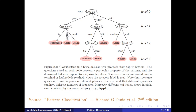This leaf corresponds to watermelon, this one to apple, this to grape, grapefruit, lemon, banana, cherry, and grape. There is no mixture of two fruits in the same leaf. Each leaf contains a pure class or pure category — a single category with no mixture.